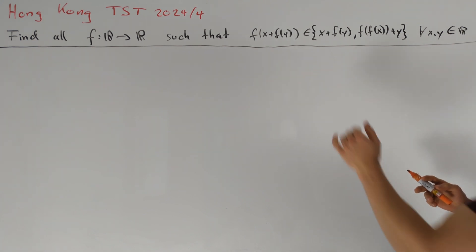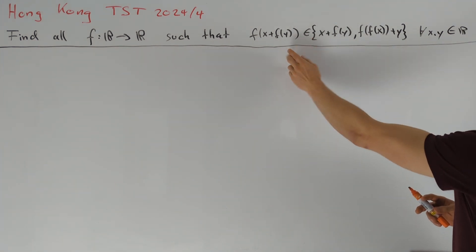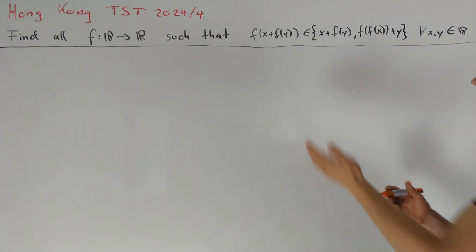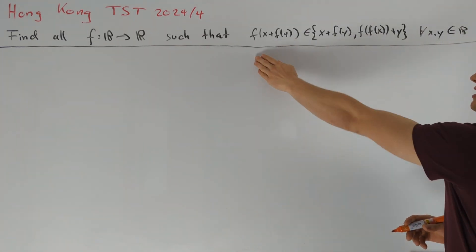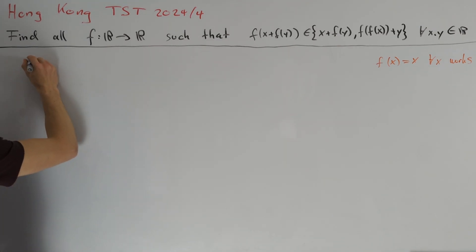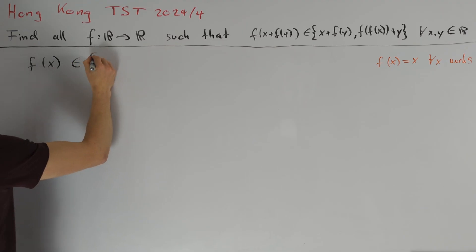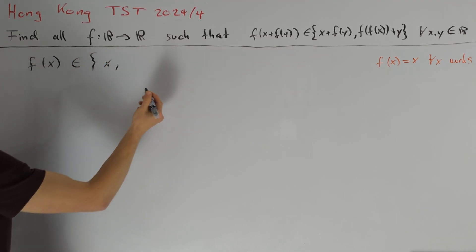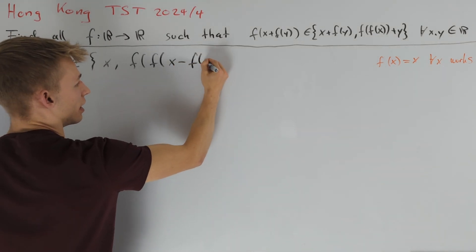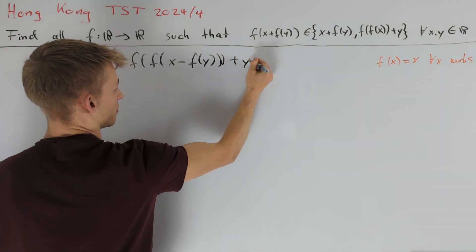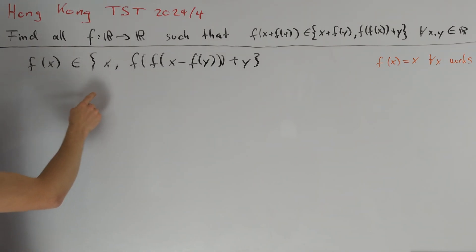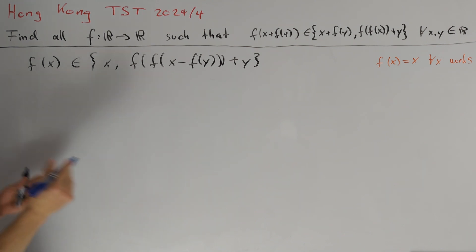The first thing to mention is that if we are in the first case then x + f(y) is a fixed point, and we can easily see that if f is the identity function then this condition is satisfied. So let's write down the solution: f(x) is in the set containing x itself and f(f(x)) - f(y) + y. Everything works out nicely if f(x) is always equal to x, so now we want to consider the other case.